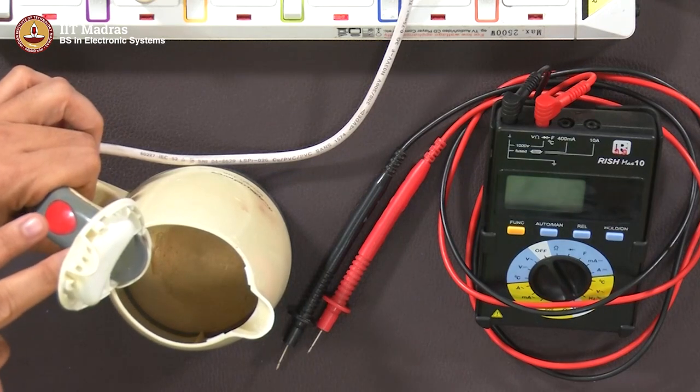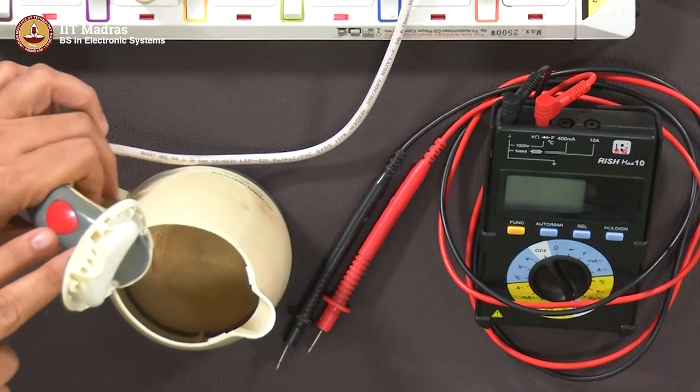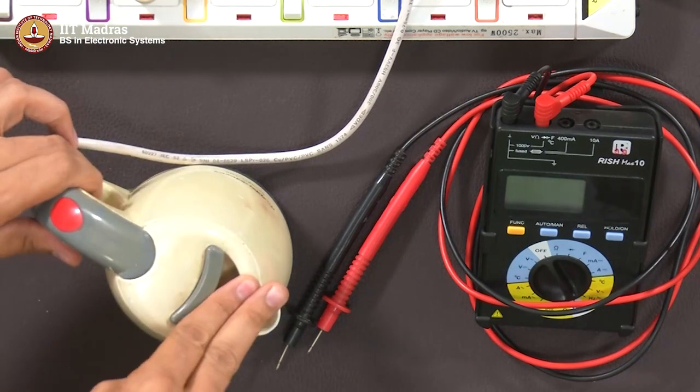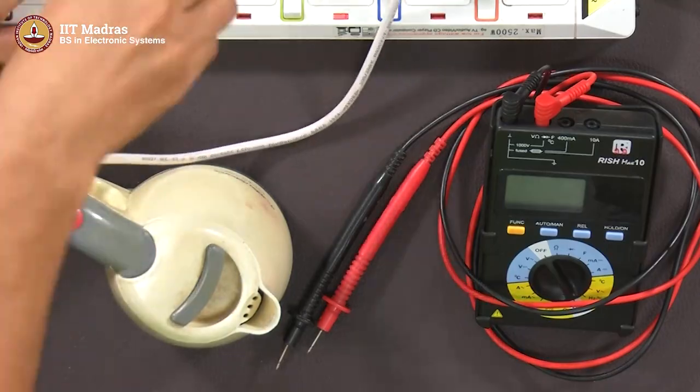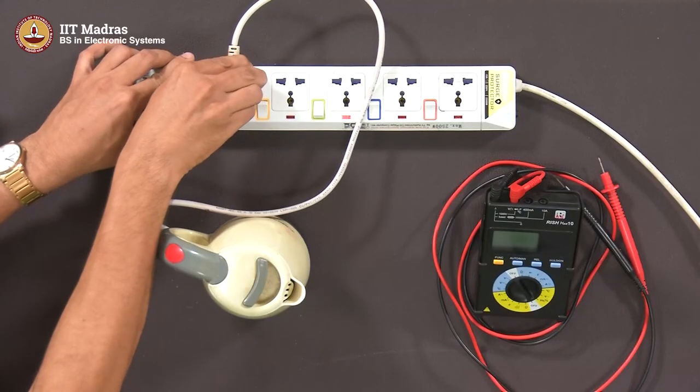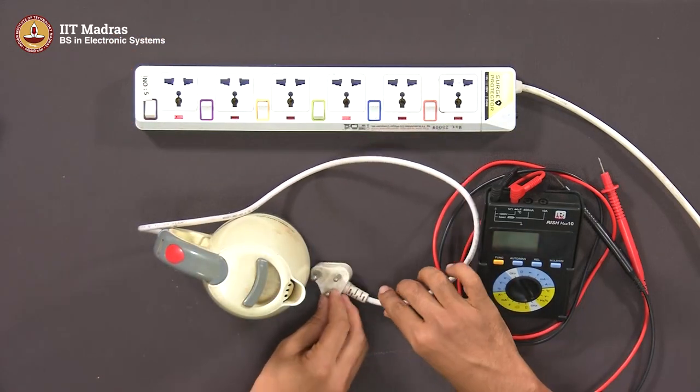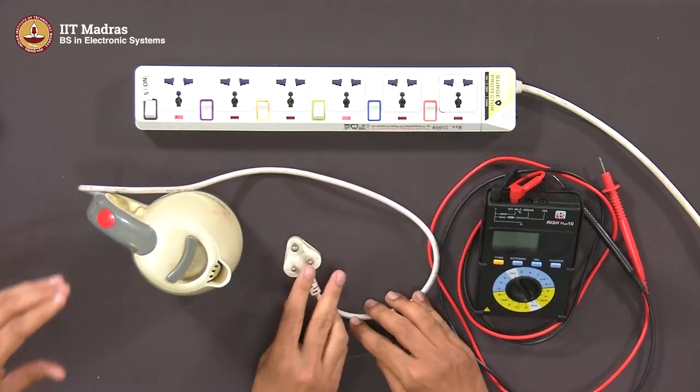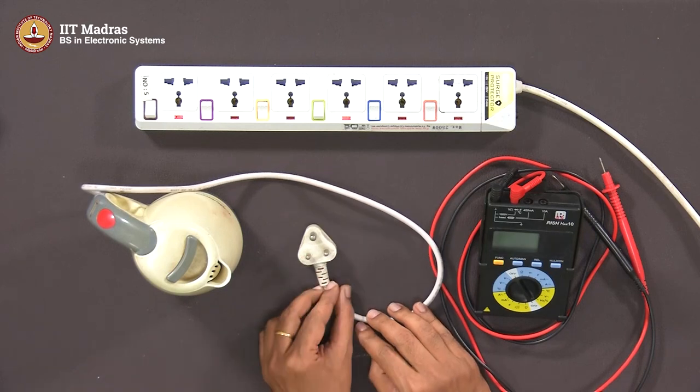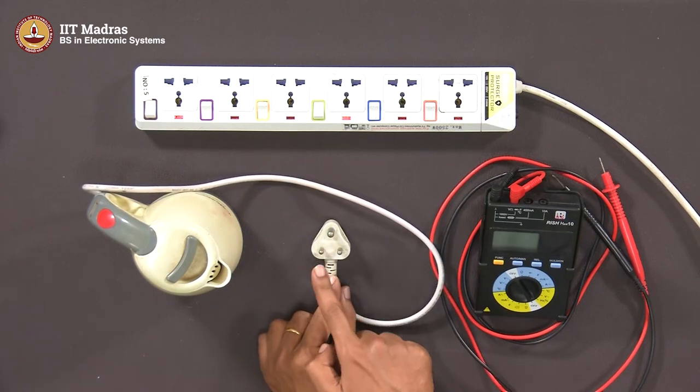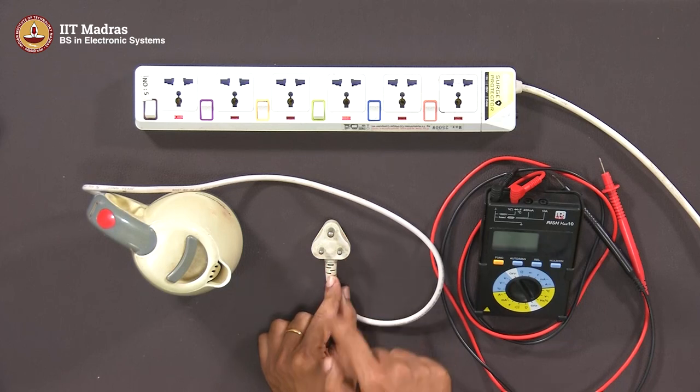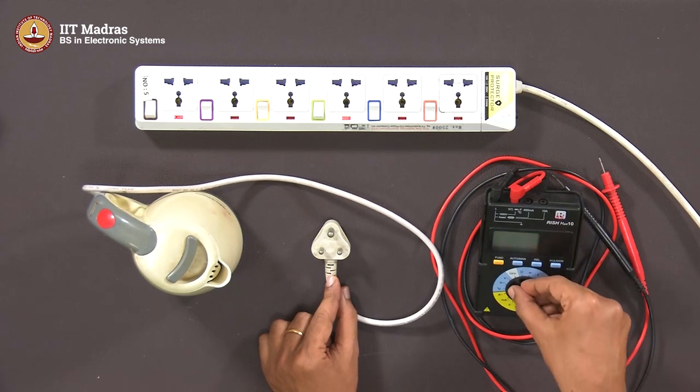You actually have a multimeter here. Can you do one measurement for me? Of course. Take this out. Can you measure the resistance between these two points? So, these are going to the phase and neutral? Yes, those are actually going to the phase and neutral. You wanted to know what is the resistance? Resistance between those two points and I will tell you why.